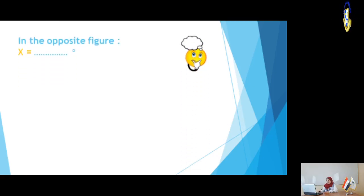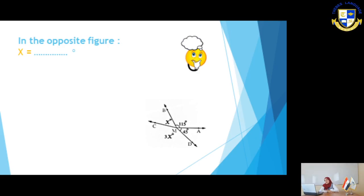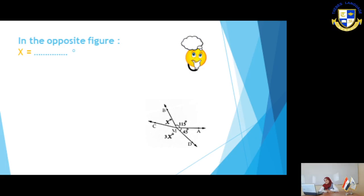Let's move to slide number 9. In the opposite figure, we want to calculate the value of X. This figure looks like a fan — we have four angles, two of which are known: measure of angle AMB equals 115 degrees and measure of angle AMD equals 45 degrees. We want to calculate X, which represents measure of angle BMC, and angle CMD is represented by 3X.